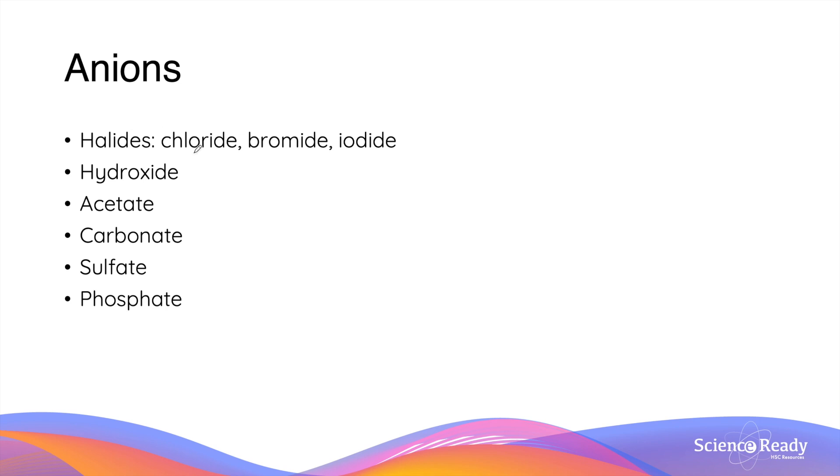This is the list of the anions you need to know how to identify. This includes the halides: chloride, bromide, iodide, hydroxide, acetate, carbonate, sulfate and phosphate.